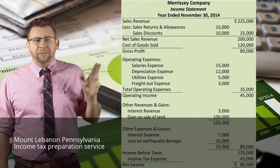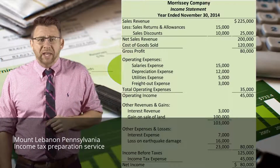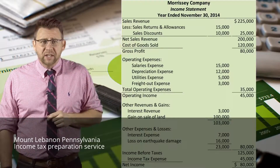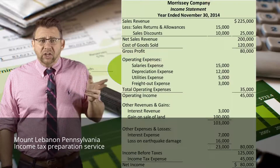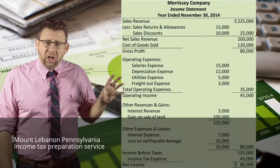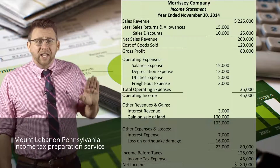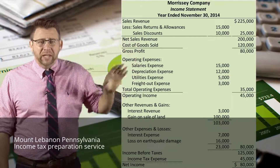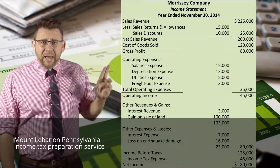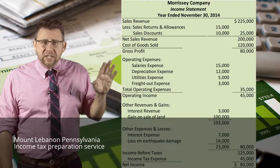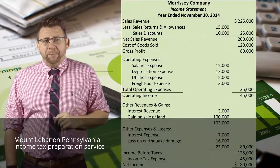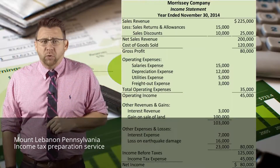Here is an example of the multi-step income statement. You can see the different subtotals listed. You will see items in an inner column being subtotaled and then that amount being carried to the outer column. Again, that does not mean debit or credit, so please remember that. Now let's look at the multi-step income statement more closely.